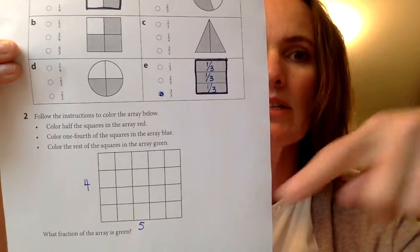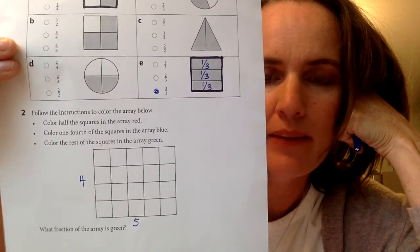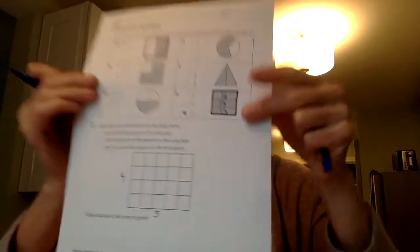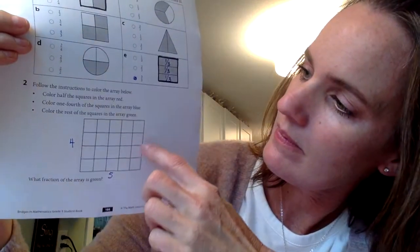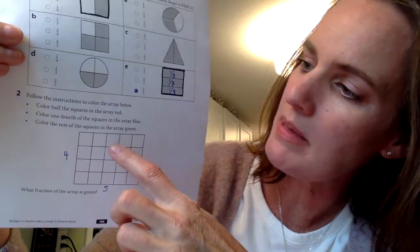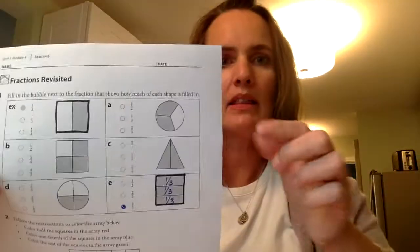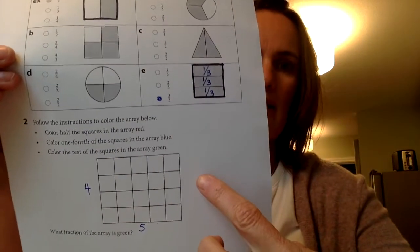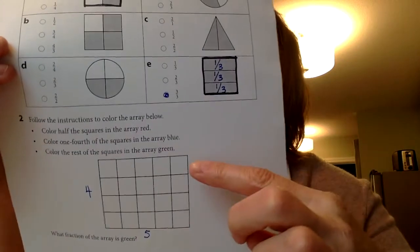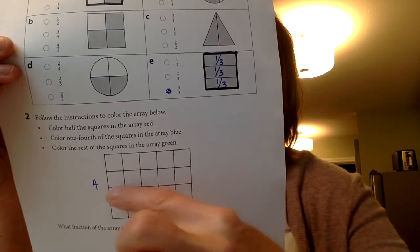So the first directions here say color half the squares in the array red. So can I divide this array, the whole, into half this way? Not really because there's three and two. That wouldn't be half because I'm going to look back at this guy where my whole is divided into half. I can't really divide it this way. Okay. But I look here, I have four going down. I can divide four in half like this.